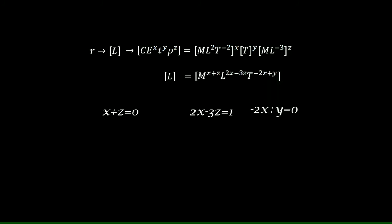From the first equation, we get x equals minus z. Plugging in this in the second equation, we get minus 2z minus 3z equals 1. And from the third equation, we have y equals 2x. From the second equation, we have z as minus 1 over 5. Using this, we can say that x is 1 over 5. And so, y is 2 over 5.